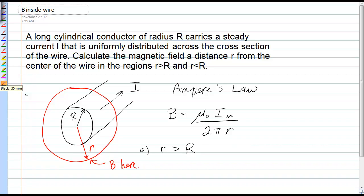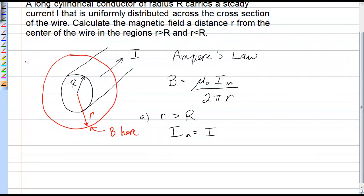In this case, the entire current flows through that Ampereian circle, so I in is exactly equal to I. We can simply substitute that into Ampere's Law to get the magnetic field outside this conductor. We see that it's exactly the same expression as for a thin wire carrying a current I. Once you're outside a large cylindrical conductor, it acts like a thin wire.